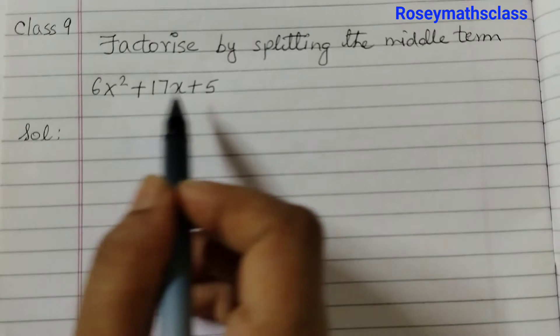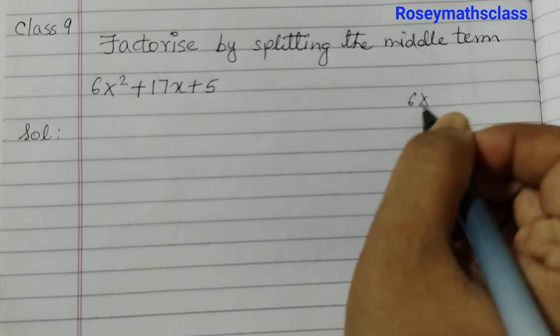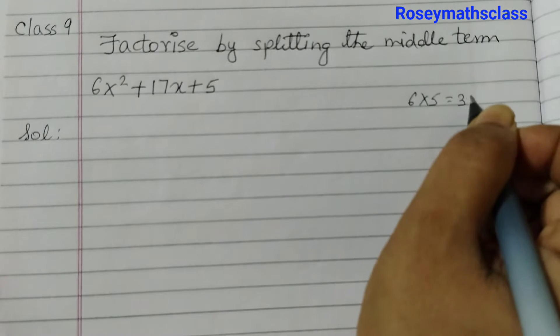First multiply 6 and 5. This is your rough work. That equals to 30.